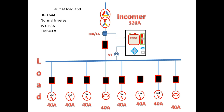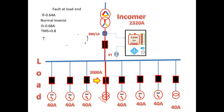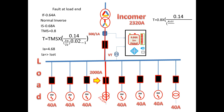The curve selected was normal inverse. The ISET is 0.68 and TMS is 0.8. Now we consider a suddenly heavy fault occurring on one of the feeder transformers. Due to this fault the fault current taken is 2000A. The actual current on the secondary due to this fault and load current is 4.68A, which is greater than ISET, so the relay will start to pick up. Substituting all values into the formula, we get a trip time of 2.8 seconds. The incomer gives a chance to the fault feeder to trip first, but if it is not tripping, the trip time is 2.8 seconds.